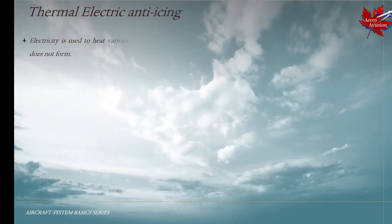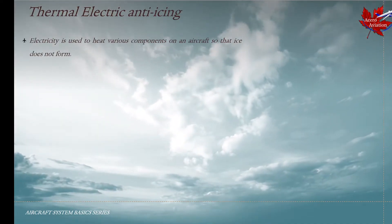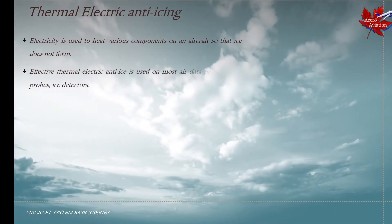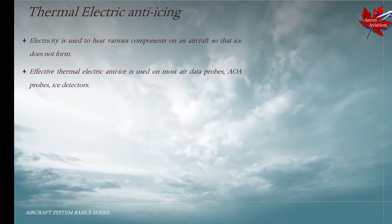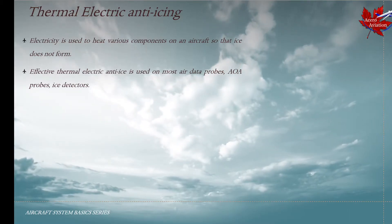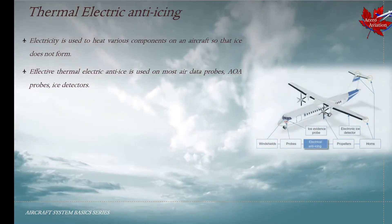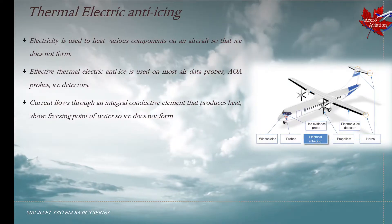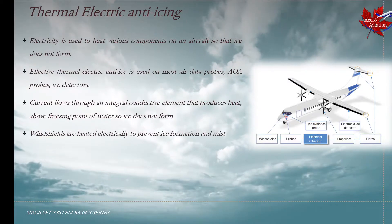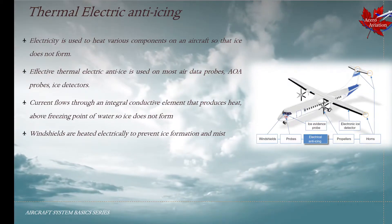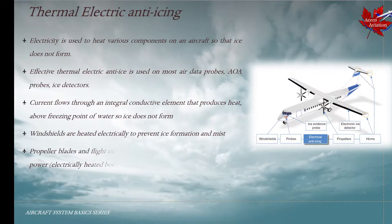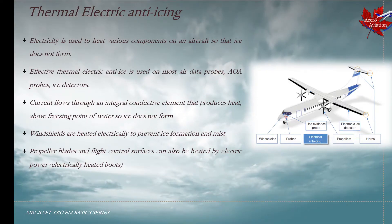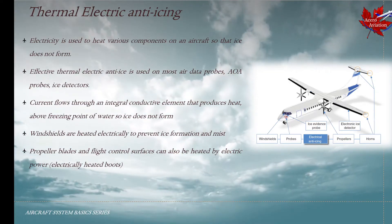Thermal electric anti-icing. Electricity is used to heat various components on an aircraft such that ice does not form on them. Thermal electric anti-icing is used on most air data probes, angle of attack probes, and ice detectors. Current flows through an integral conductive element that produces heat. Windshields are heated electrically to prevent ice formation and mist. Propeller blades and flight control surfaces can also be heated using electric power, usually using electrically heated rubber boots.